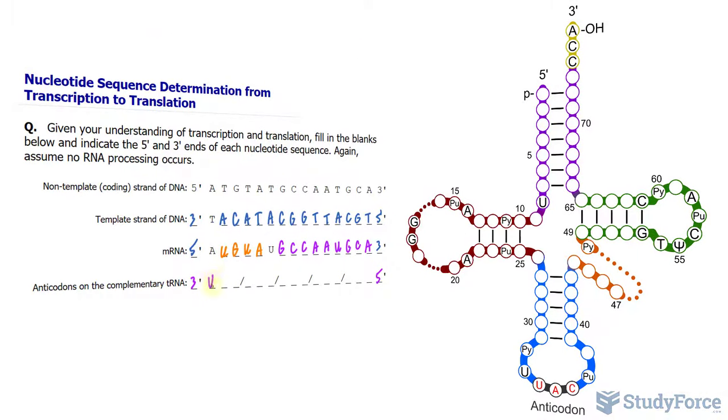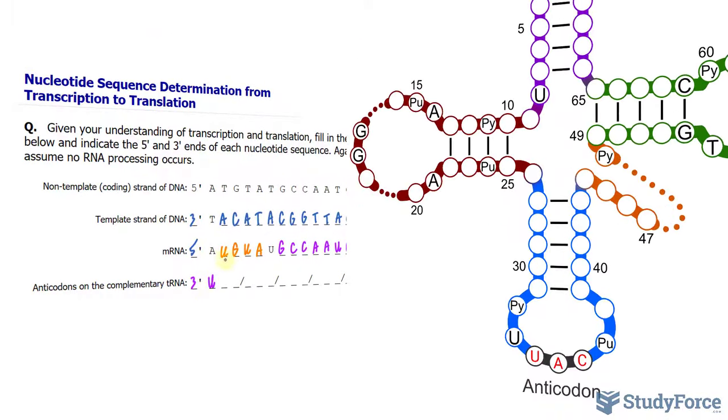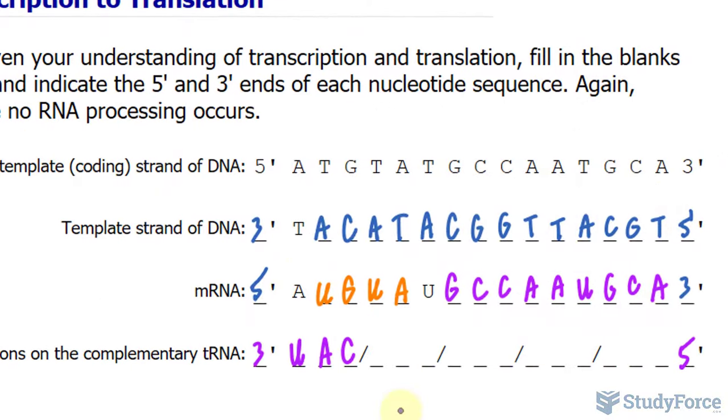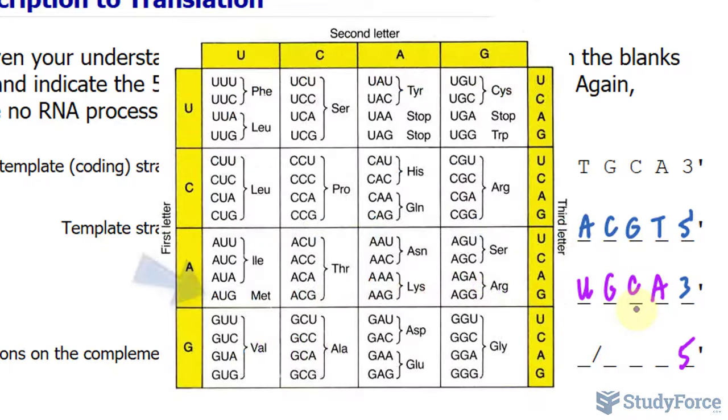The anticodon will have a complementary sequence to this. So A will base pair with U, U base pairs with A, and G base pairs with C. The tRNA molecule has to have this sequence in its anticodon region. Interestingly, when mRNA is AUG in its nucleotide sequence, methionine is the one that is connected to the tRNA having this anticodon sequence. Of course, you can translate this using a codon chart like the one shown on your screen, but that's not the purpose of this question.